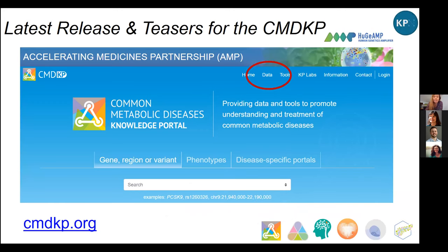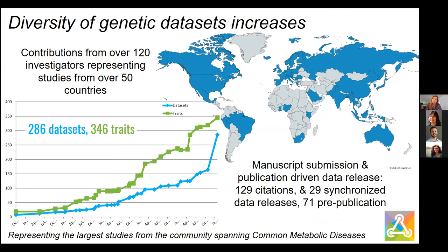First today I want to give you a little bit of teasers on what's on the CMDKP today. It's been a pretty impressive last six months in terms of data integration for the portal. Across the network right now, the CMDKP now has 286 datasets across 346 traits, and you can see in recent months that has really upticked. This comes from over 120 investigators that we worked hand in hand with to represent their results from over 50 countries worldwide. This has also led to manuscript submission and data-driven publication release for over 129 citations synchronized with publication releases.